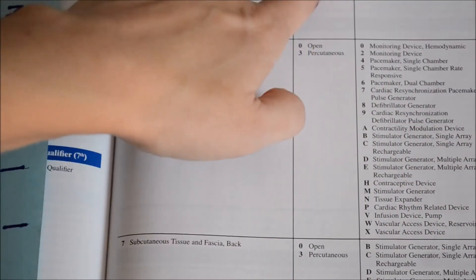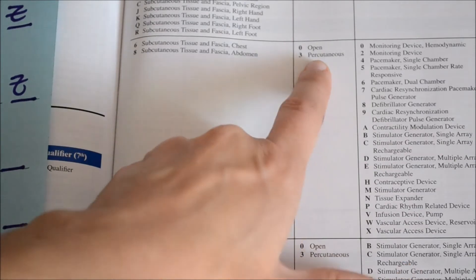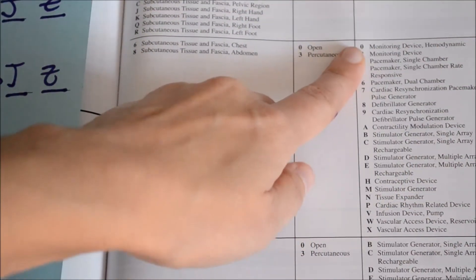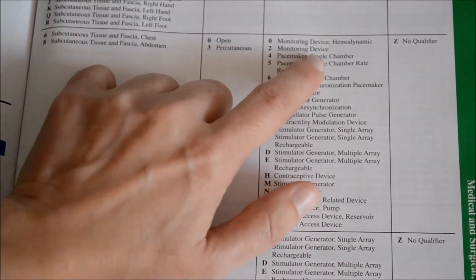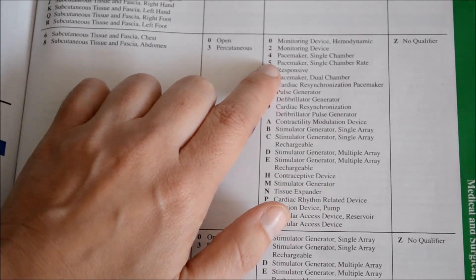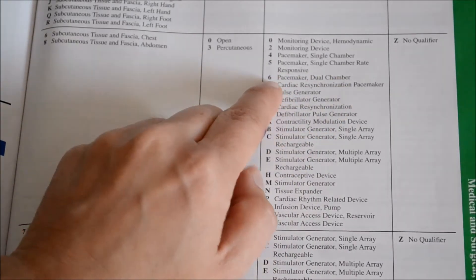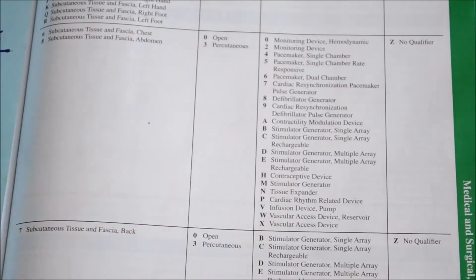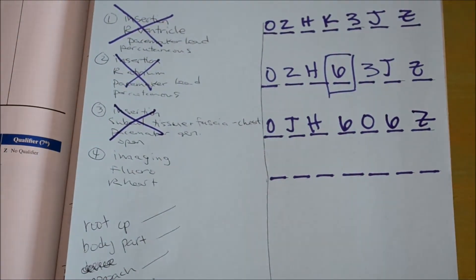Staying within this row, we look at the fifth character placement — the approach — which gives us open or percutaneous. We already decided on open, which is a 0. In our device column, the sixth character, there are many choices. We need a pacemaker generator. There's pacemaker single chamber, but the op report said dual chamber pacemaker — and there it is: pacemaker dual chamber, which is a number 6. The qualifier column says Z, no qualifier, so we put a Z. Our third code is done.